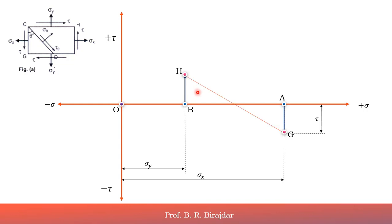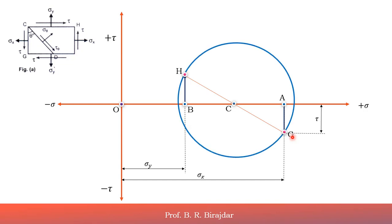Now join points H and G with a line. This line HG represents the diameter of the Mohr's circle. Where this line crosses the horizontal axis, mark the center C. Taking C as center and CH (or CG) as radius, draw a circle — this circle is the Mohr's circle.